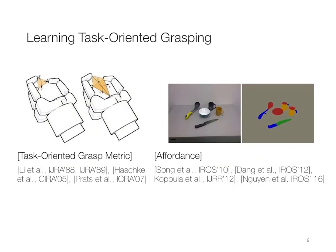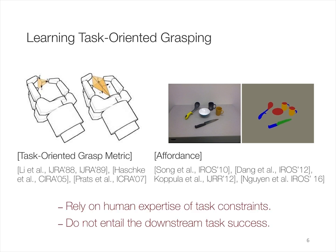Most previous task-oriented grasping models learn from either a hand-crafted quality metric or affordance labels annotated by humans. These approaches rely on human expertise of the task constraints, and they do not entail the success of the downstream manipulation tasks.